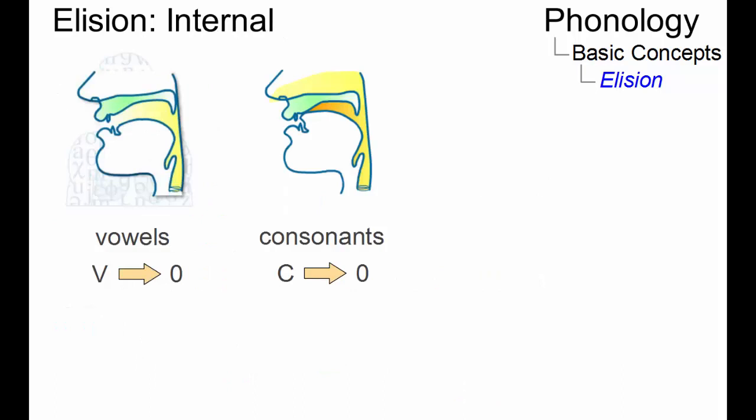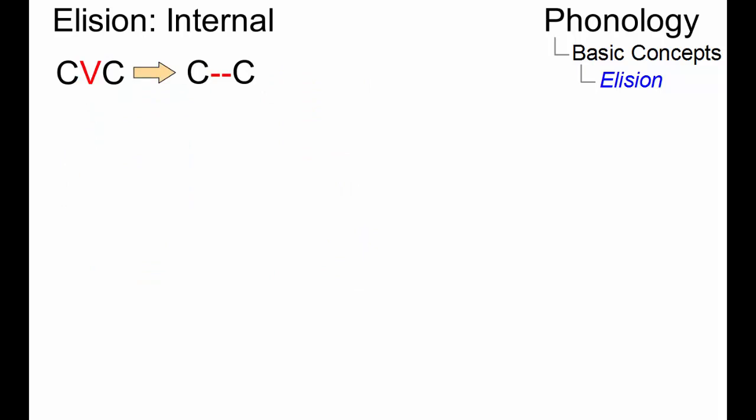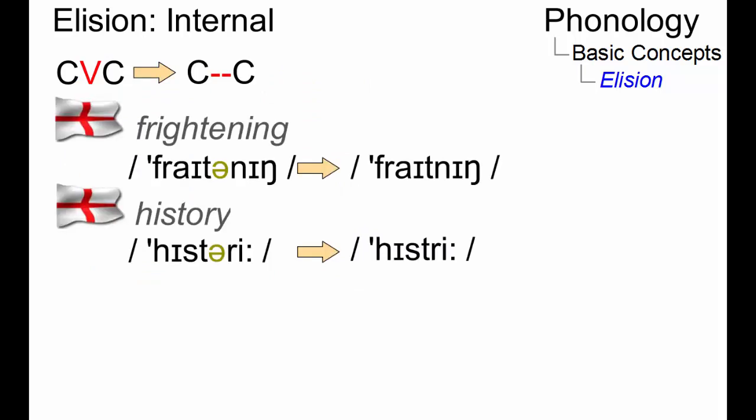Word internal elision affects both vowels and consonants. Whereas the elision of vowels is a result of the rhythmic structure of English, as in frightening or history, where unstressed vowels may disappear.